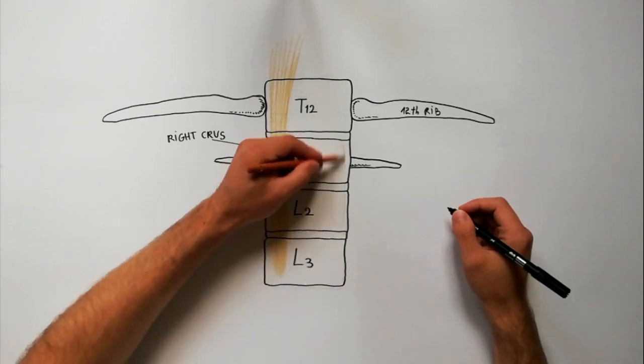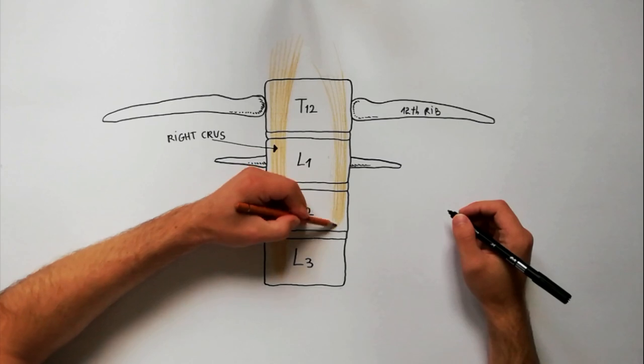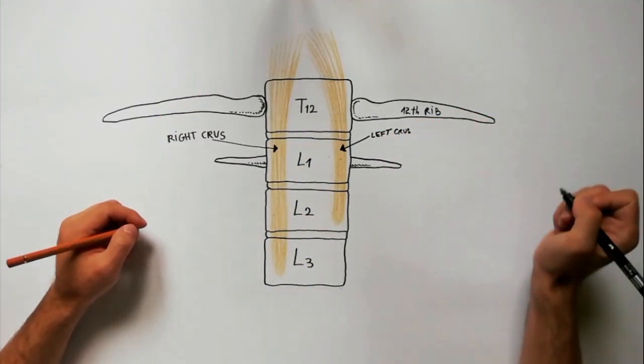The left crux is shorter and arises from the left side of anterior aspects of upper two lumbar vertebrae and the intervening intervertebral disc.